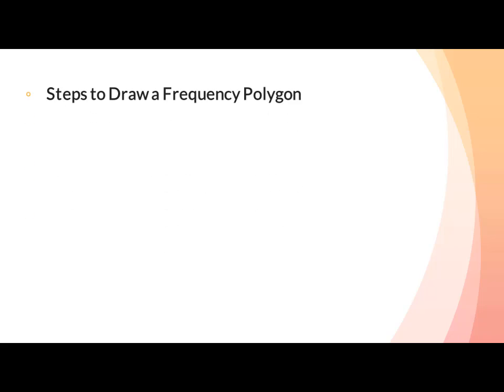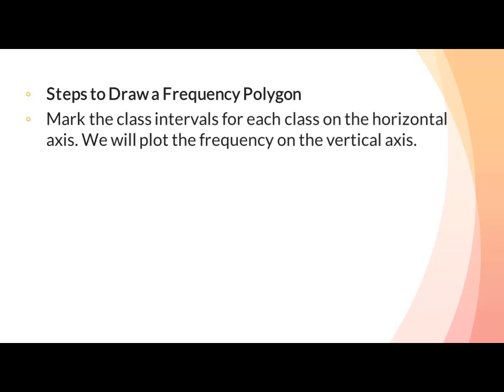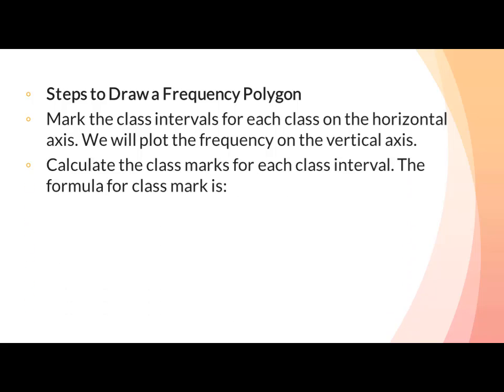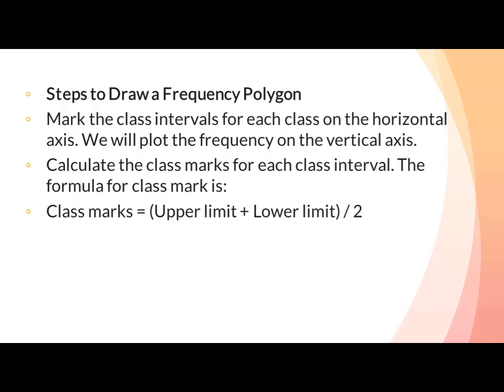Steps to draw a frequency polygon: mark the class intervals for each class on the horizontal axis and plot the frequency on the vertical axis. Calculate the class marks for each class interval. The formula for class mark is: class mark = (upper limit + lower limit) / 2.